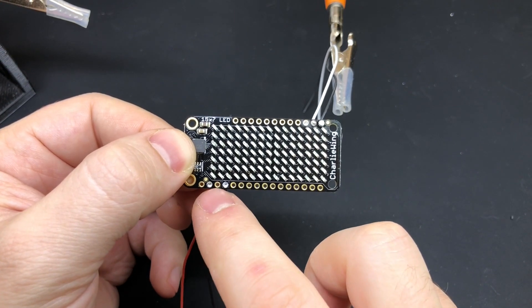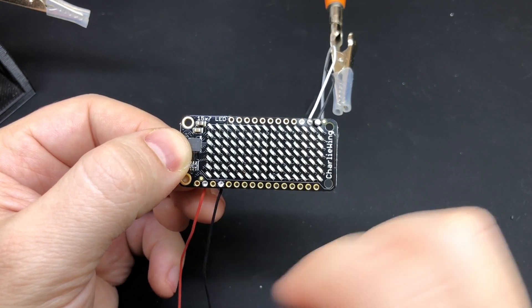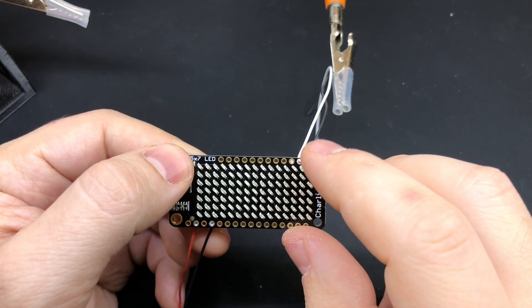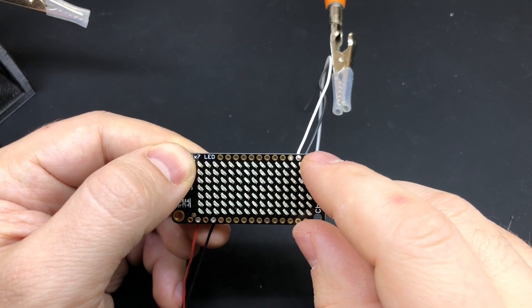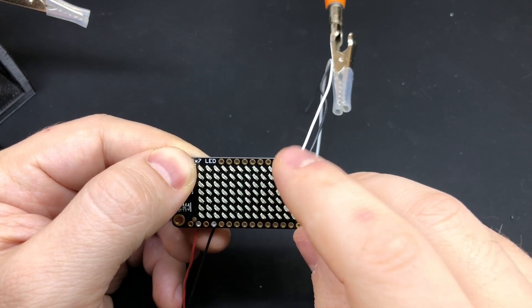On the bottom left here I've got my power input, positive and ground. And then I've got my data input on the top right. SDA is on the right and SCK is on the left.